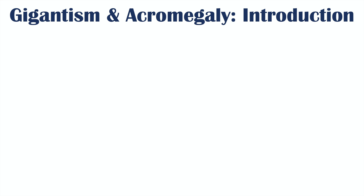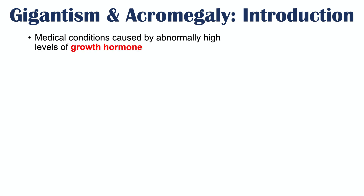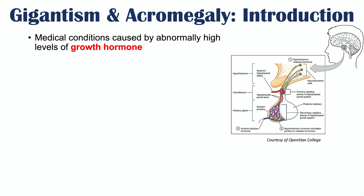Both gigantism and acromegaly are medical conditions caused by abnormally high levels of growth hormone. Growth hormone is one of the hormones released from the anterior pituitary gland — a small sac-like gland below the hypothalamus. It receives inputs from the hypothalamus, including some stimulating and inhibiting hormones.